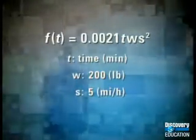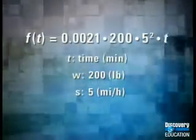Suppose this runner weighs 200 pounds and runs at a constant speed of 5 miles per hour. We can substitute these values for W and S and compute to get this linear function relating time running to calories burned. For this runner, the function is F of T equals 10.5 times T.